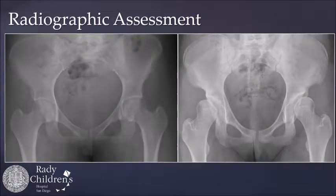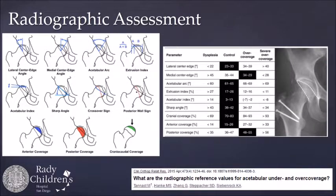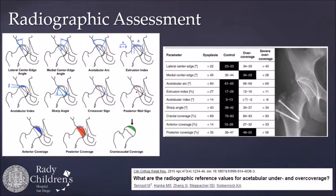We've been using plain AP radiographs for more than 100 years, using the lateral center edge angle and the tonus angle to define the acetabulum on this one-dimensional image. Moritz and the Bern Group published an excellent study in CORE in 2015 to bring attention to the anterior wall, posterior wall, and start making measurements to understand the three-dimensional shape of the acetabulum, even though we're just looking at a one-dimensional image.